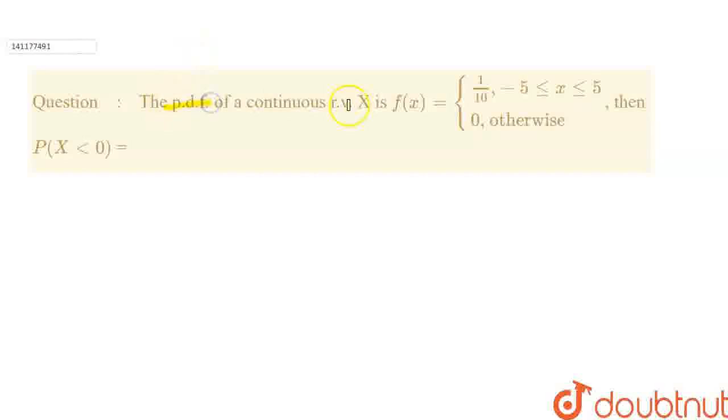The probability distribution function of a continuous random variable x is f(x) equals 1 by 10 for x greater than or equal to minus 5 and less than or equal to 5, and 0 otherwise. Then probability of x is less than 0 equals dash.